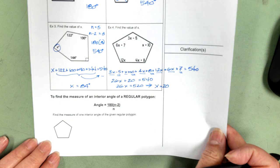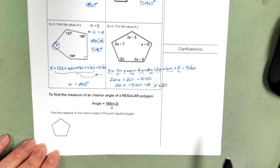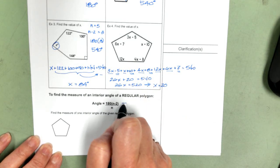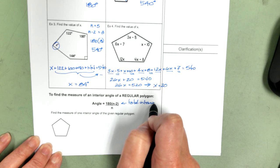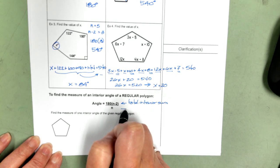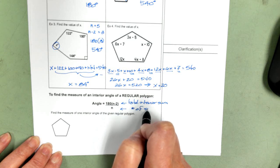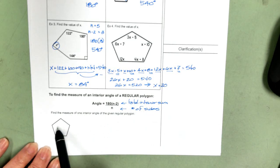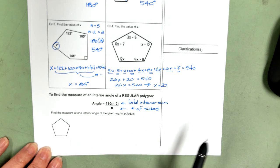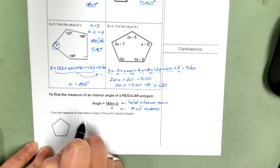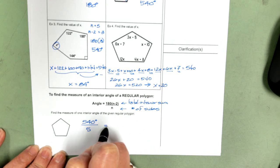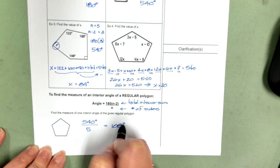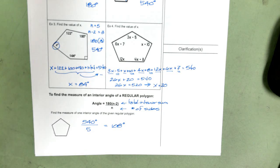Now, when we're looking at a regular polygon, again, a regular polygon has congruent sides and congruent angles. We have this formula here. We find the total sum, and then we divide it by the number of sides. So again, I count up the sides. One, two, three, four, five. We already know that for a five-sided figure it is 540. We divide that by five, and each angle is 108 degrees. So that's the interior.